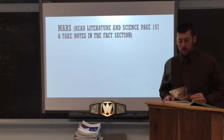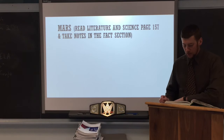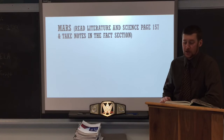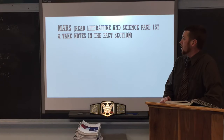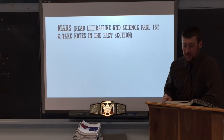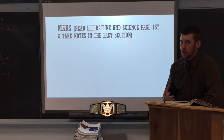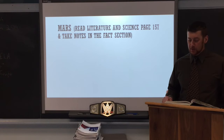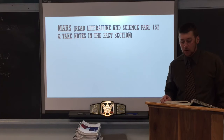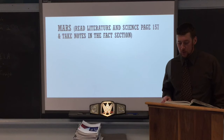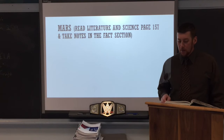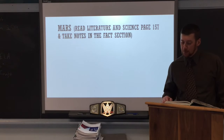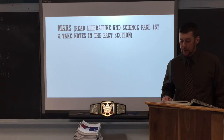We are going to turn to page 157 in the textbook and look at the Literature and Science section. I would like you to take a few notes about the planet Mars, as it has a lot to do with the setting for our story. Mars is called the Red Planet because its surface is covered with red dust. The strong Martian winds create huge dust storms. Depending on how much dust is in the air, the Martian sky ranges from pink on a clear day to purple on a stormy one.